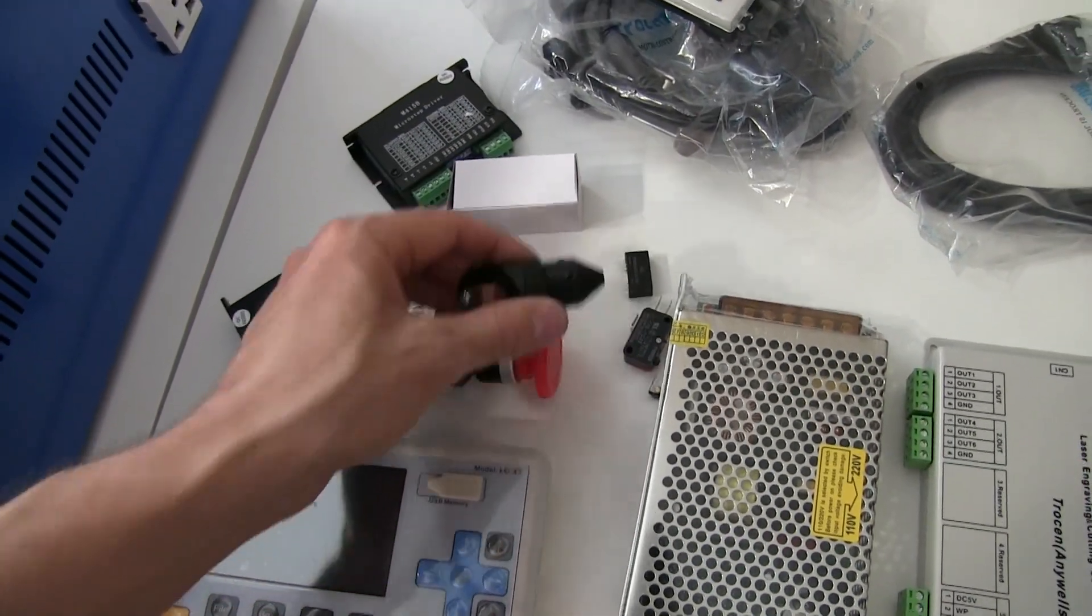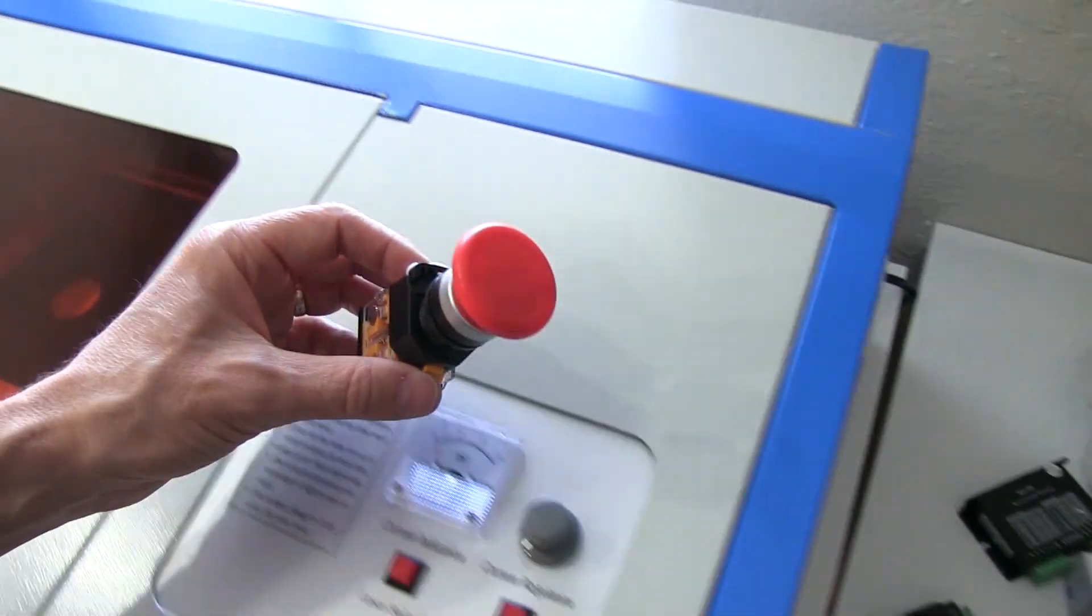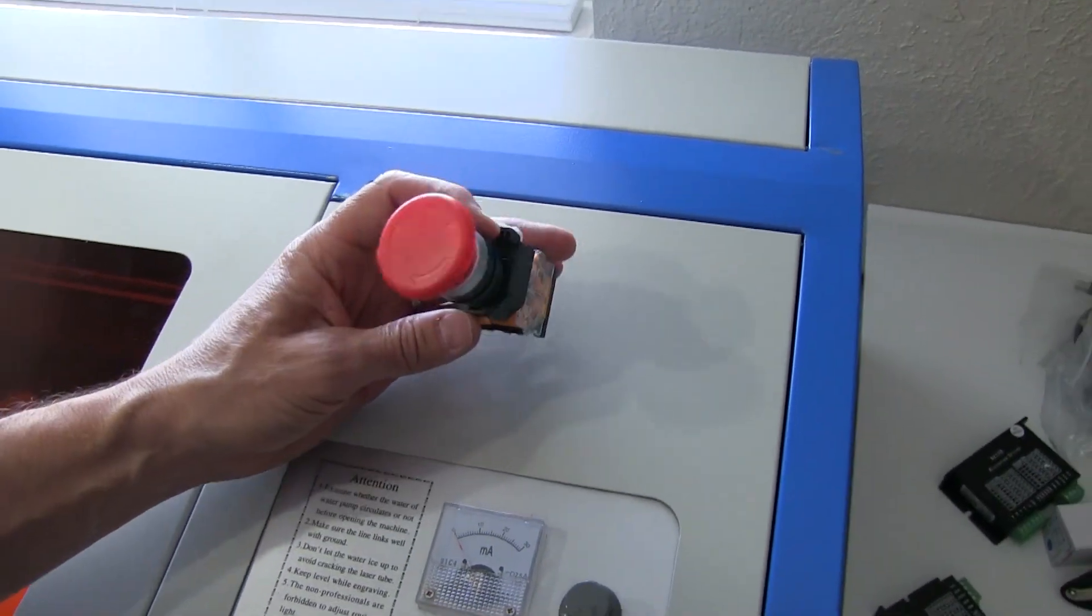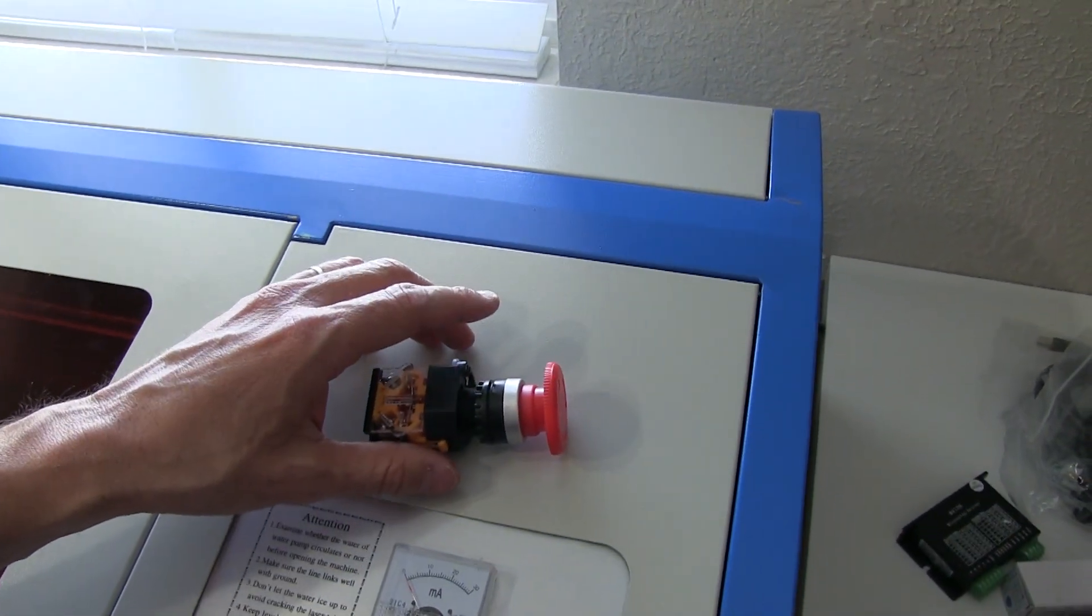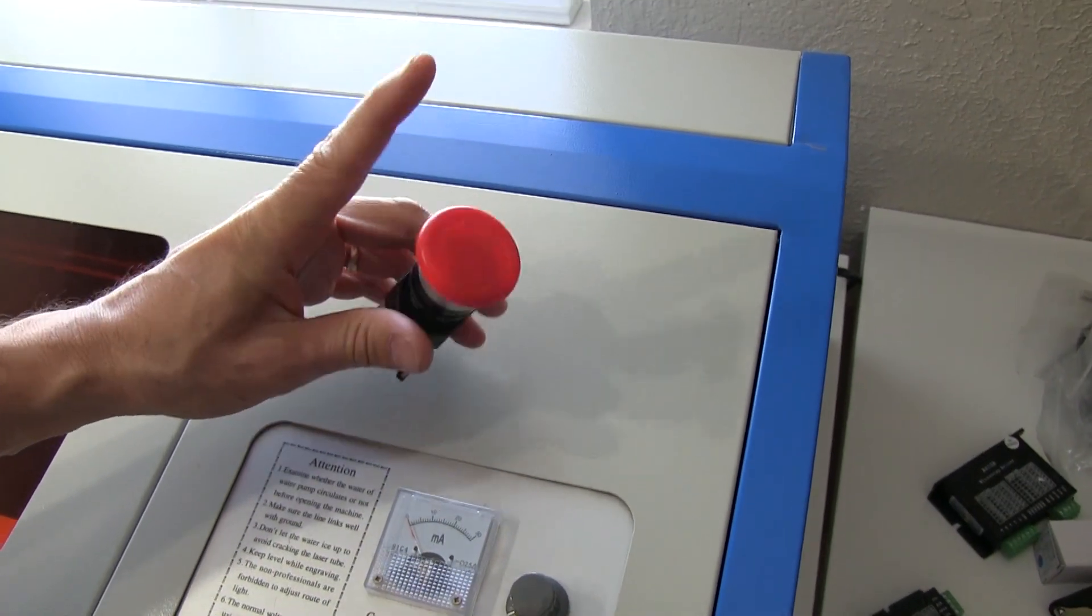Putting in new laser head. Better mirrors. Better lens. And, of course, the all-important emergency stop button. Just in case something happens and the laser beams start shooting around my room, I can just mash that button to turn it off. Kind of cool.